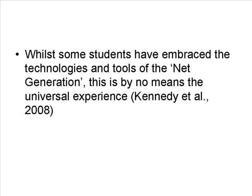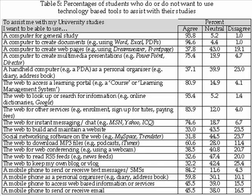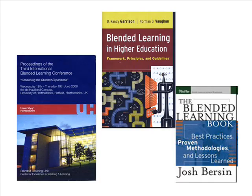A survey of more than 2,000 incoming first-year Australian university students in 2006 also finds a high level of support for the use of computers, the web and mobile technologies for some uses, but not for others. The researchers conclude that while some students have embraced the technologies and tools of the next generation, this is by no means the universal student experience. However, the findings are a cause for optimism: no more than 25% of respondents disagreed with the use of any specific technology, and in all cases more respondents were unsure than those who indicated resistance. Students appear to be looking for a moderate integration of technology, valuing face-to-face experiences — preferences that may be best met through blended learning.